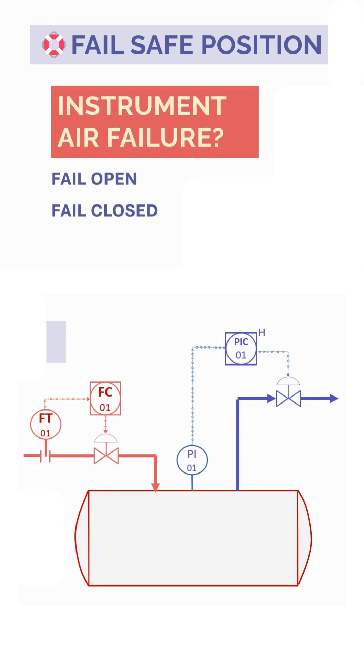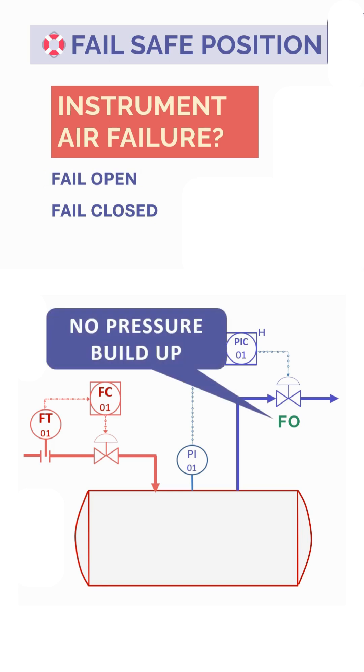choose this position that won't cause a safety issue. So if the instrument air was cut from this pressure control valve on the outlet line and from the flow control valve on the inlet line, the pressure control valve shall go to the open position, which means that the pressure will not build up. And the inlet control valve shall